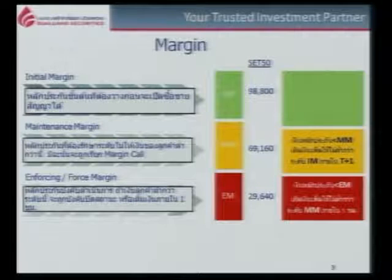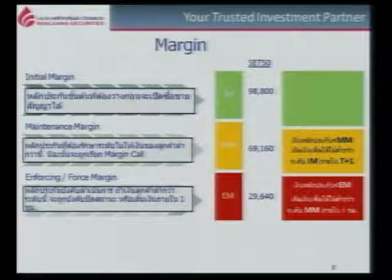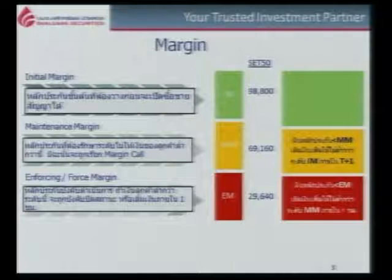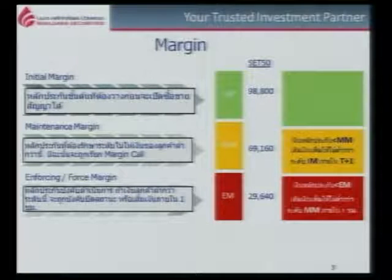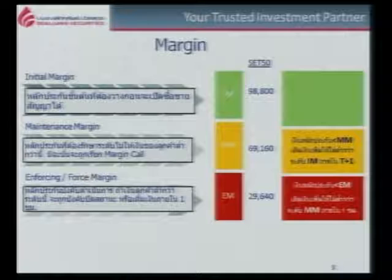If you have been in the market, you may know that during the past year the initial margin was around 300,000 to 400,000 baht. Currently, due to high market prices, the margin has been adjusted. The maintenance margin — the minimum level you must maintain — is 70% of the initial margin. For SET50, that is 70% of 98,800 = 69,160 baht.